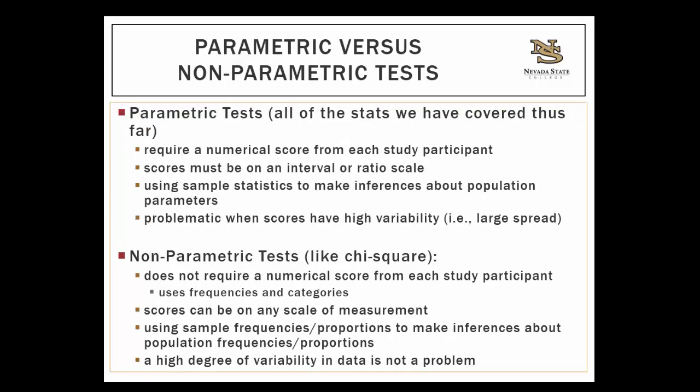All of the statistical analyses that you've learned about this semester were parametric tests. Parametric tests require a numerical score from each study participant. So when you look at the data for a parametric test, you're seeing all the scores — all of the measures for the dependent variable from that study. You also have to have scores that are on an interval or ratio scale, something that's numeric in nature. Parametric tests are all about using sample statistics, like the sample mean, to make inferences about population parameters, like the population mean. A statistic is just the word for a numeric value used to explain characteristics of a sample, and a parameter is the term for a numeric value used to explain characteristics about the population.